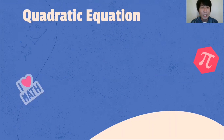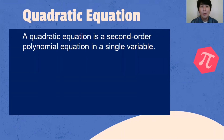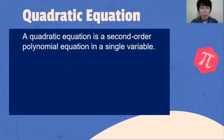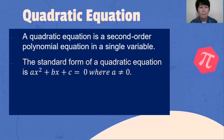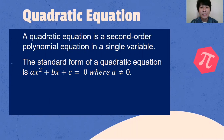What is a quadratic equation? A quadratic equation is a second-order or second-degree polynomial equation in a single variable. The standard form of a quadratic equation is AX squared plus BX plus C is equal to 0, where A should not be equal to 0.